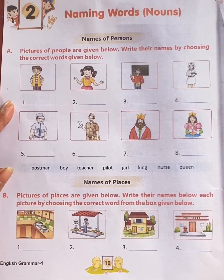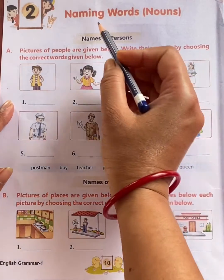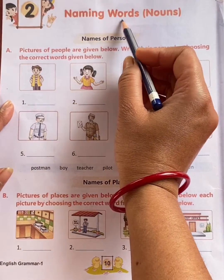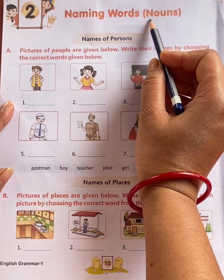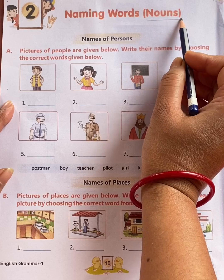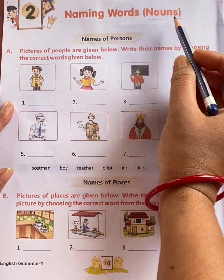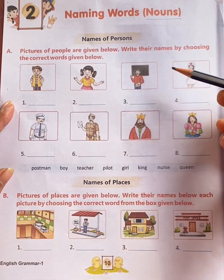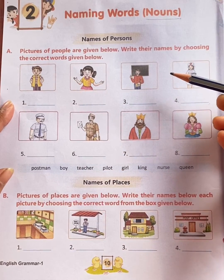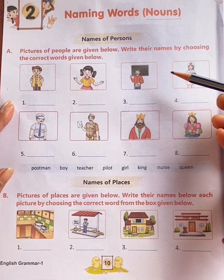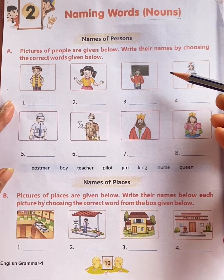Our today's grammar topic is naming words, nouns. Naming words are the names of persons, places, animals or things.